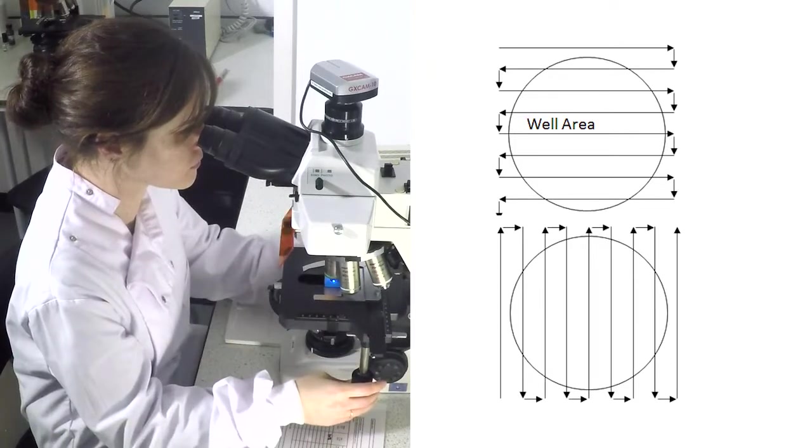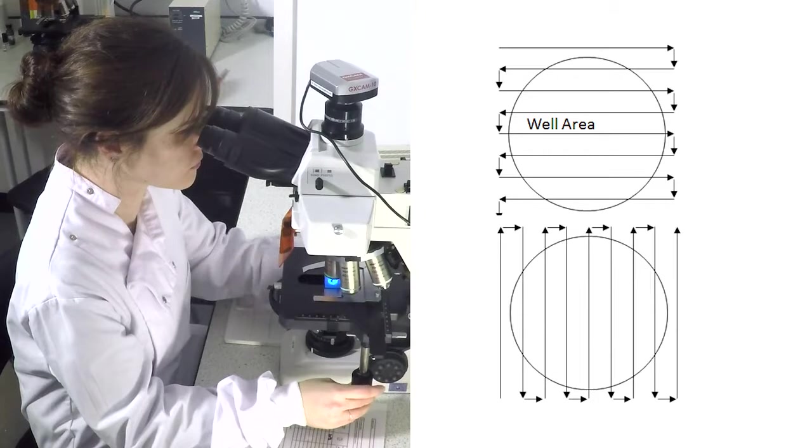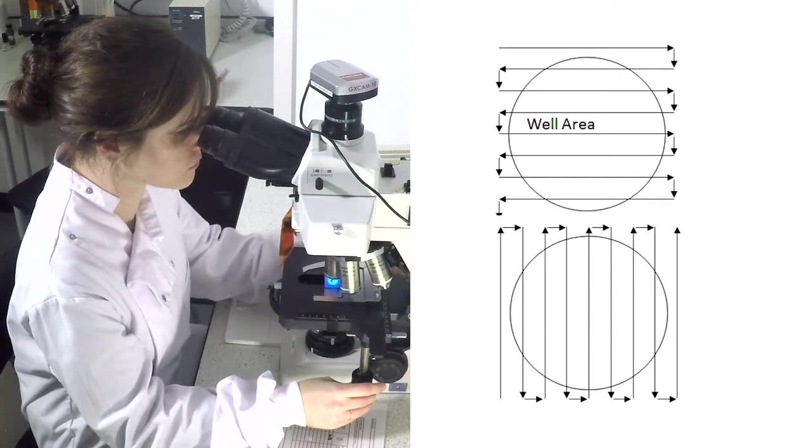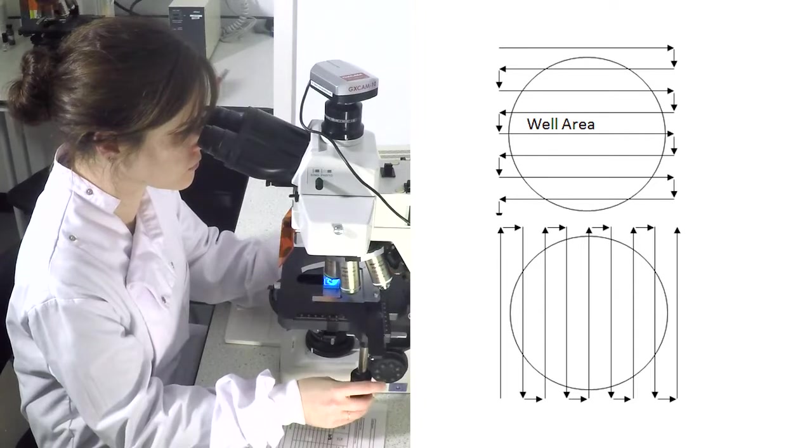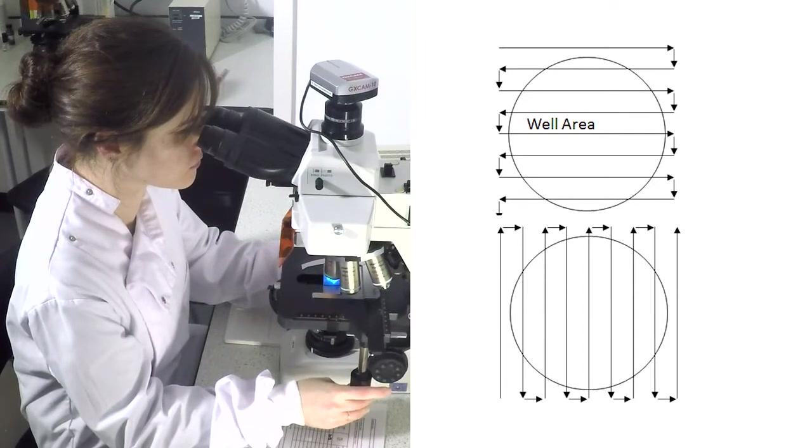Objects outside of the well area cannot be counted as it's not possible to confirm using DIC. During this step, the location of presumptive target organisms should be noted using the vernier scale.